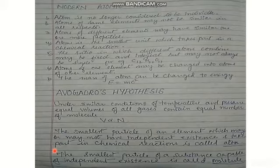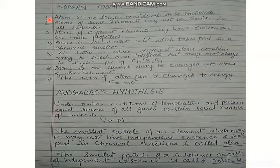To remove these limitations, we have the modern atomic theory. According to this theory, the atom is no longer considered to be indivisible — it can be divided into subatomic particles known as electrons, protons, and neutrons. Atoms of the same element may not be similar in all respects.